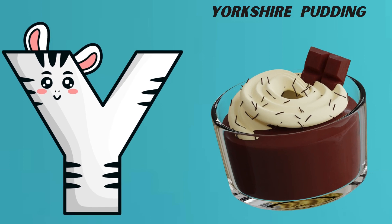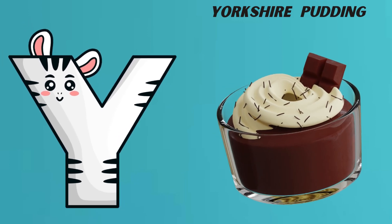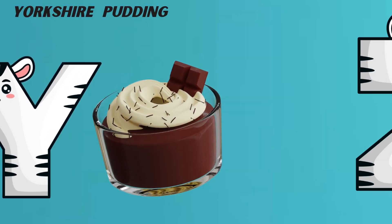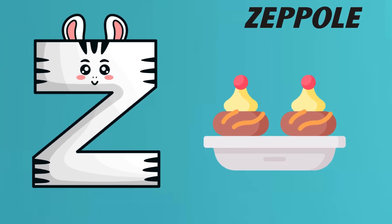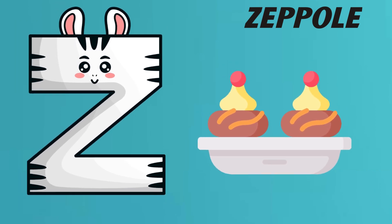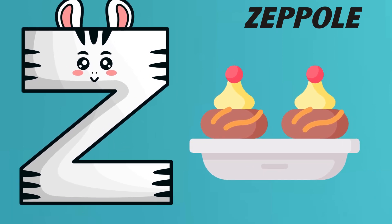Y is for Yorkshire Pudding. Yorkshire Pudding. Z is for Zeppole. Zeppole.